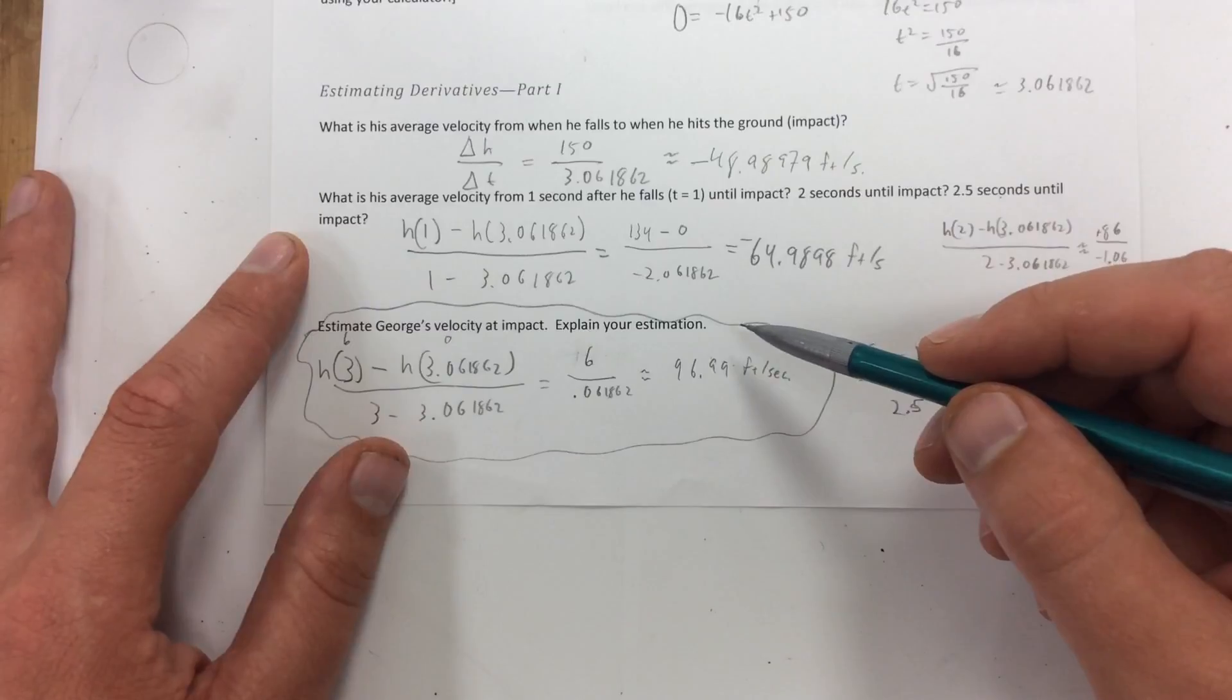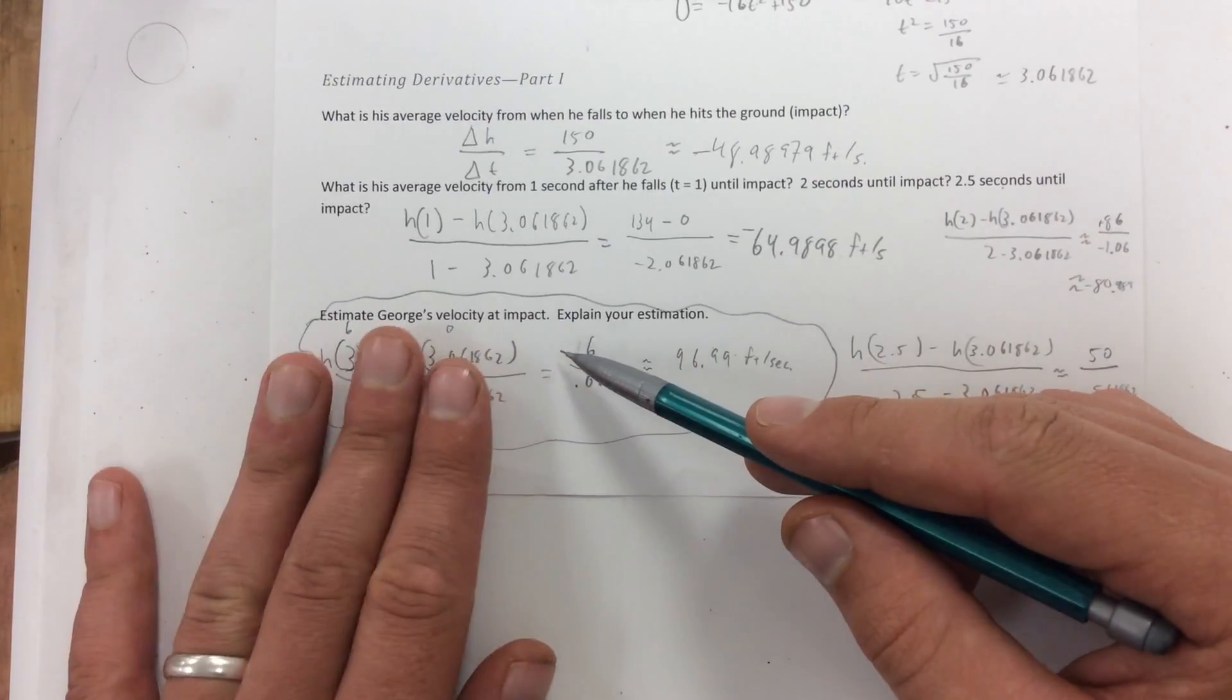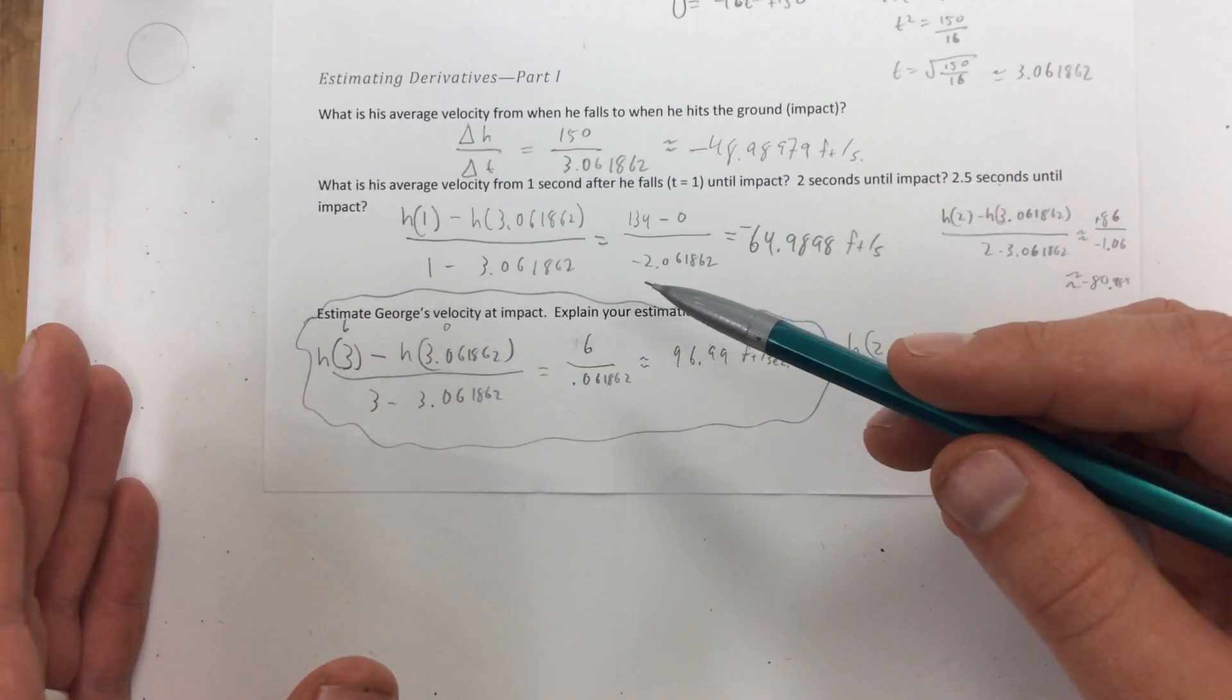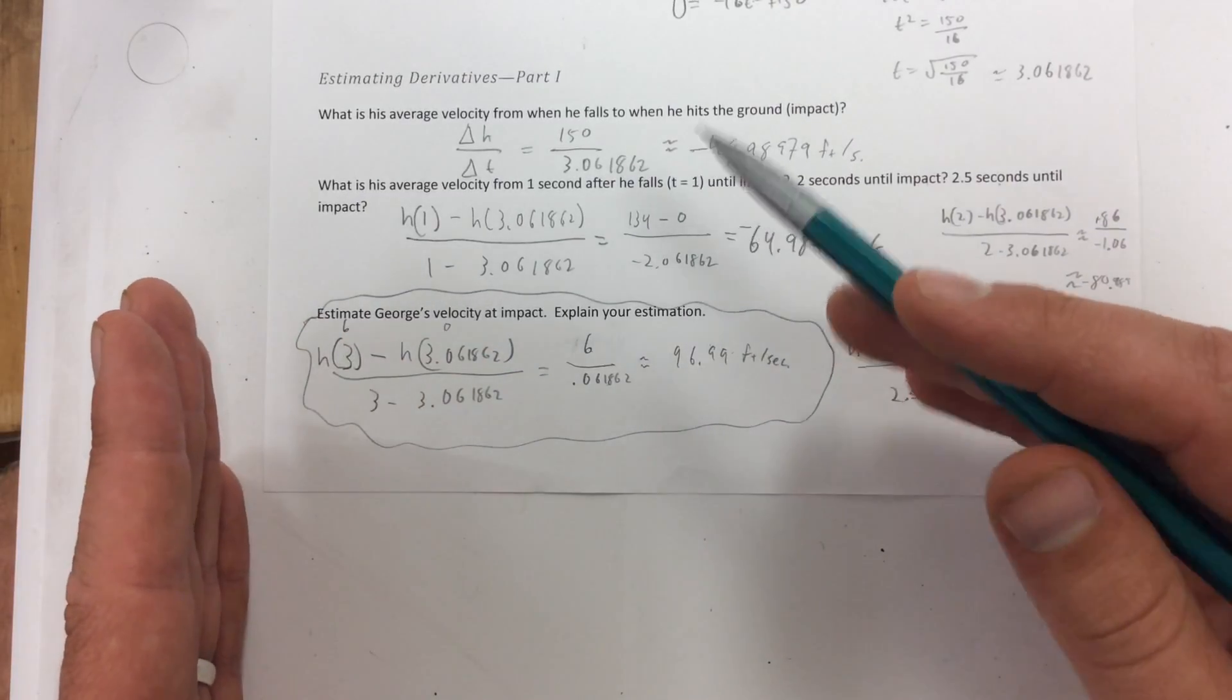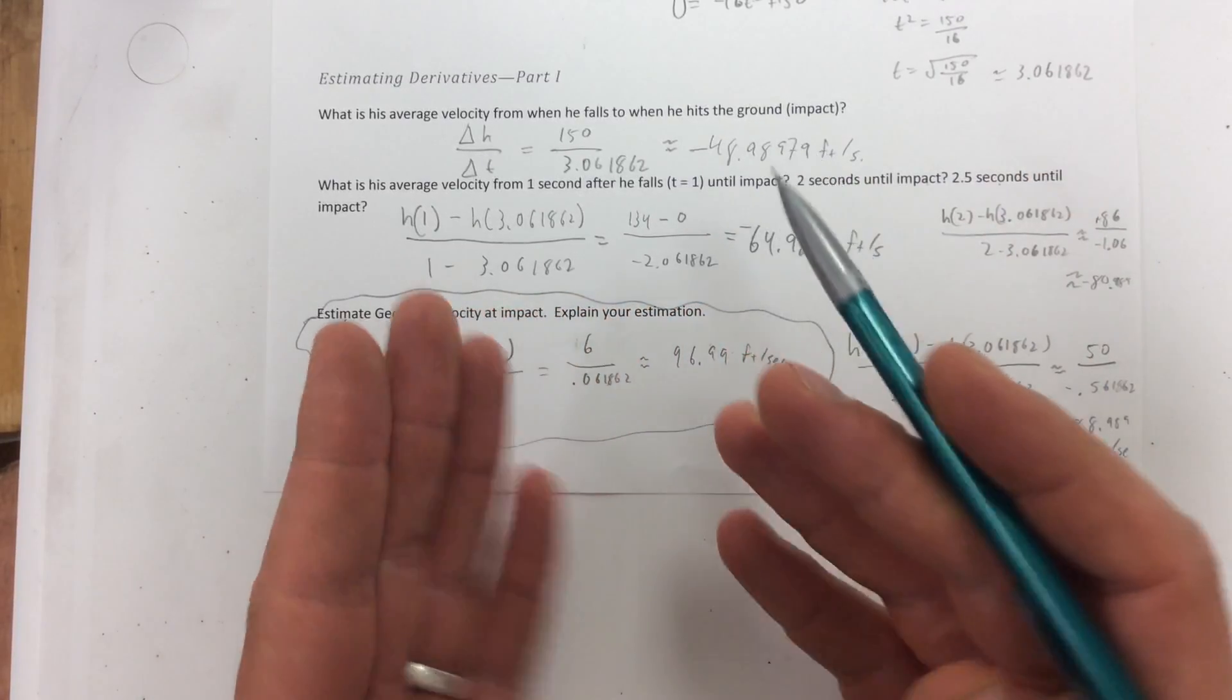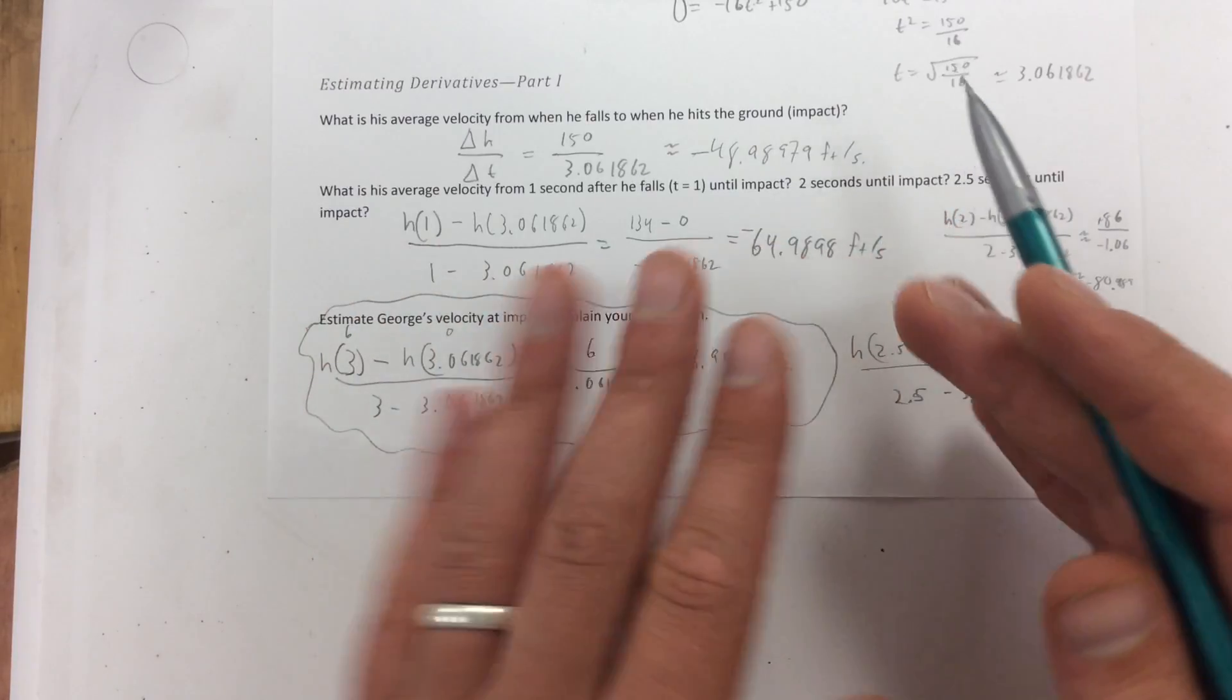Okay. So what I did is, to find his velocity of impact, I just found something really close to the ground. And this should sound familiar. If I'm going to try to find something really close, I can use a limit. I just need to make sure the limit's getting really close to it.